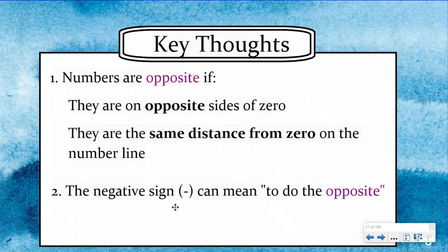And number two, the negative sign can mean to do the opposite, right? When we first introduced negative numbers, we introduced the negative sign as being directional. It's telling you to move to the left of zero. Well, another meaning, and it doesn't change the original meaning, is that the negative sign can mean do the opposite. And that makes a lot of sense. If you wanted to do the opposite of positive eight, then you would do negative eight, and you'd be moving to the left of zero. So it doesn't change our original definition of the negative sign being directional, but it adds another layer to it.